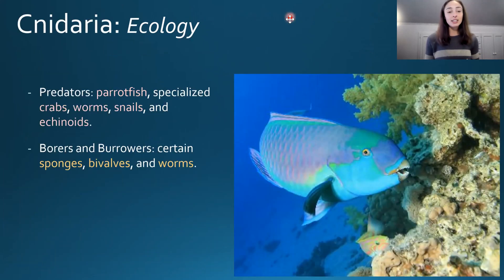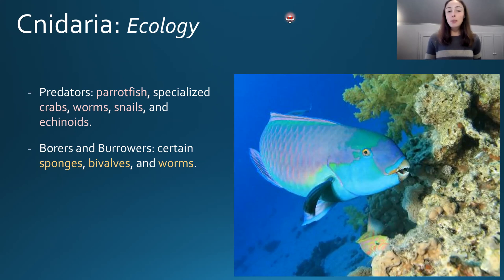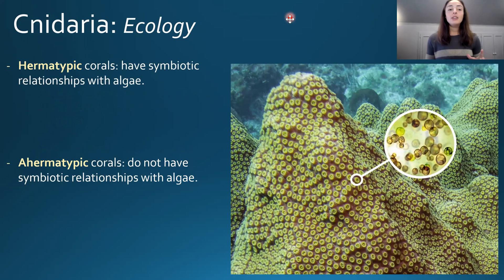Regarding cnidarian ecology, predators of corals include parrotfish, certain crabs, worms, snails, and echinoids, but corals have more mutualistic relationships than predator-prey ones — except when it comes to humans. There are also animals that burrow and bore into corals, such as sponges, bivalves, and worms.